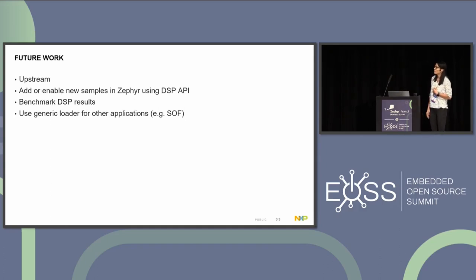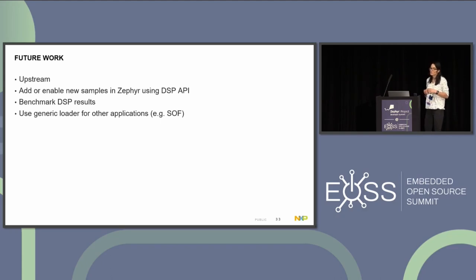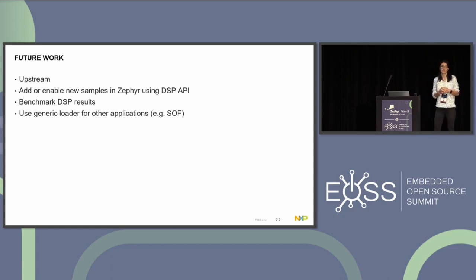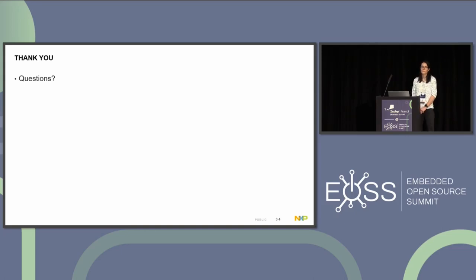For future work, we plan on enabling and maybe creating new samples in Zephyr that will use the DSP API. First, I need to upstream the OpenAMP support — this is a work in progress and will be done soon. We also want to benchmark the DSP to see how good it is and justify its use. And maybe use a generic loader for other samples like the SoundOpen Firmware. We are open to suggestions.